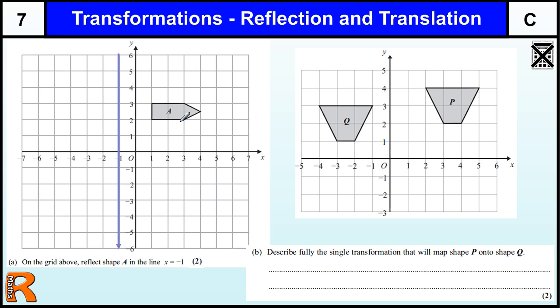So we're trying to reflect this shape. Whenever we're doing transformations, we just need to move the corners of the shape. So this reflection needs to be two squares on this side.